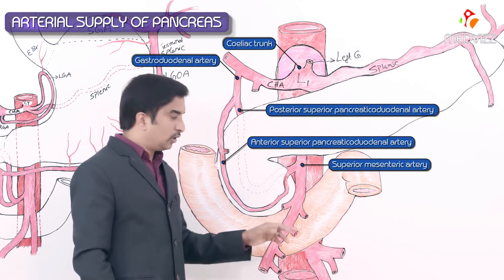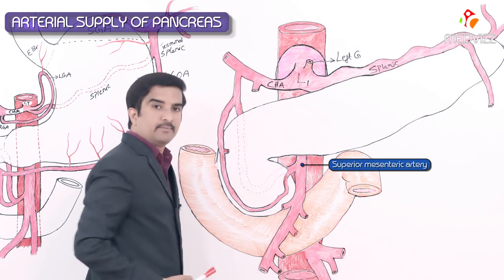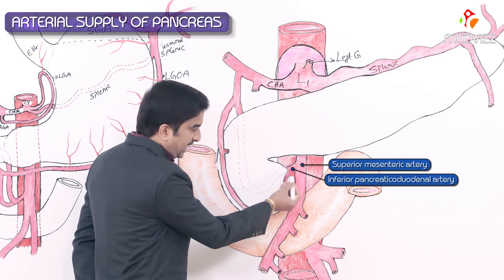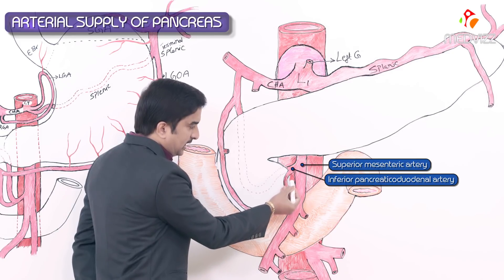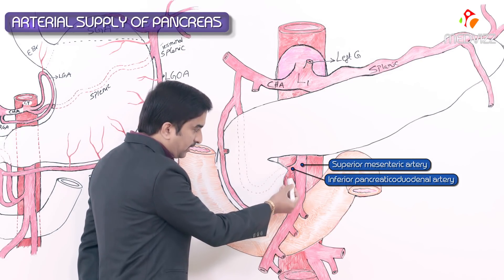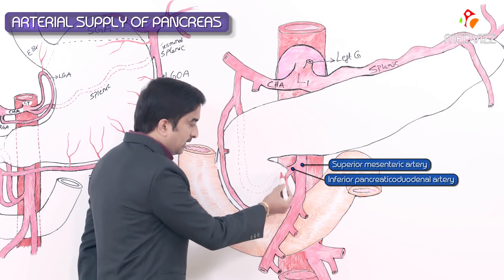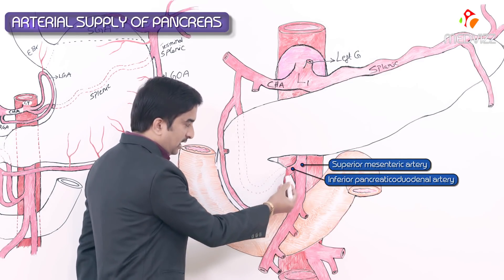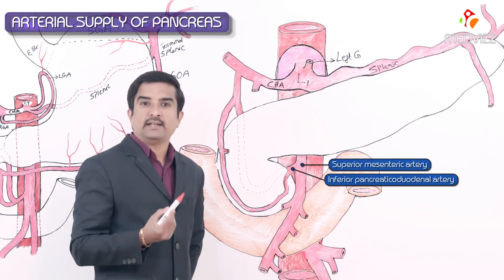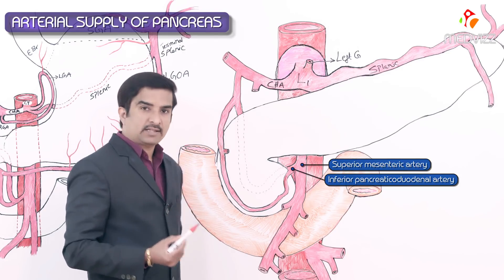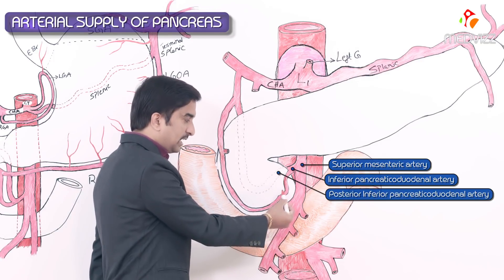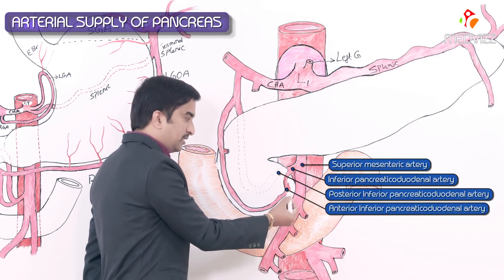The superior mesenteric artery gives off the inferior pancreaticoduodenal artery, which divides into two branches: the posterior branch — called the posterior inferior pancreaticoduodenal artery — and the anterior branch — called the anterior inferior pancreaticoduodenal artery.